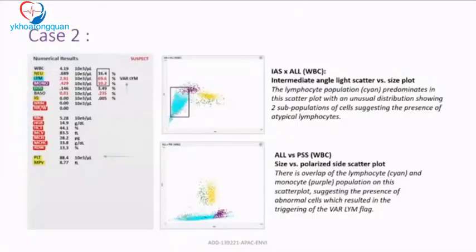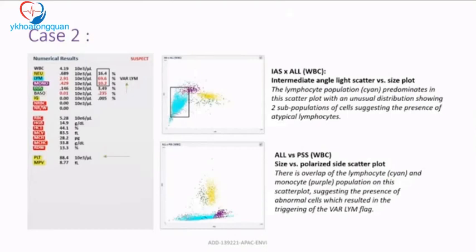Case two: the WBC count was low-normal at 4.19, but the lymphocyte count was high with notable variation, triggering a lymphocyte variation flag. Looking at the IAS and PSS scatter plots, the light blue lymphocyte population is clearly increased. A distinct V-shaped dent at the peak of the WBC population indicates two subpopulations of lymphocytes, suggesting atypical lymphocytes.